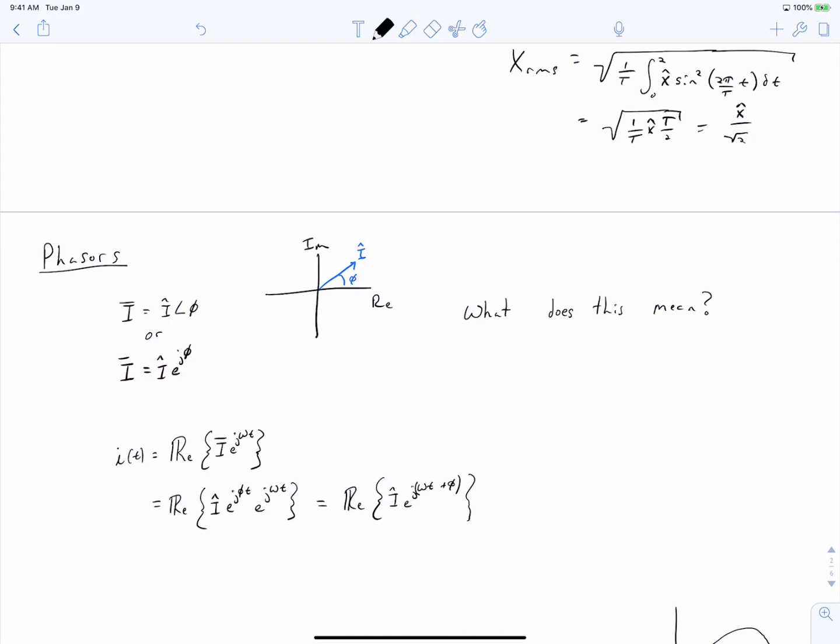We use phasors to represent sinusoids in a convenient and compact fashion. You've previously learned that you convert from the phasor domain to the time domain by taking the real part of the phasor quantity. We can use Euler's formula to express the quantity as i hat times the cosine of omega t plus phi plus j sine omega t plus phi. Clearly, the real portion of this is this part of your expression. So all of that is to say that i of t is equal to i hat cosine of omega t plus phi.